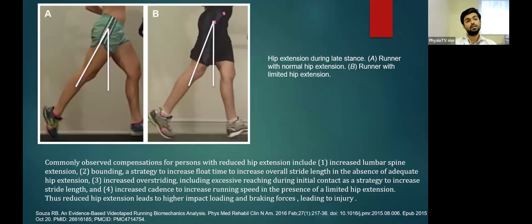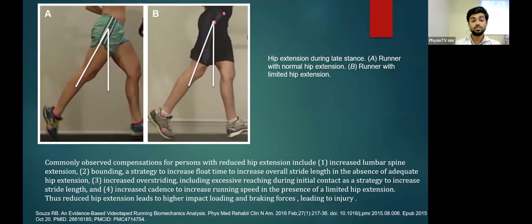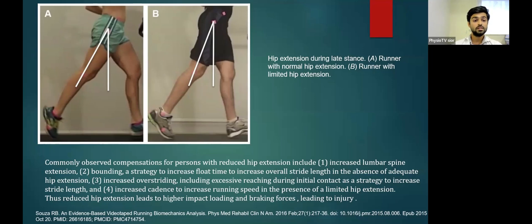Regarding hip extension angle — diagram A shows normal hip extension, while diagram B shows a reduced or limited hip extension angle. When hip extension is reduced, there will be an increase in lumbar spine extension. There may be an increase in bounding as a strategy to increase float time and overall stride length. It also increases over-striding, including excessive reaching during initial contact. Fourth, increased cadence may compensate for limited hip extension. Reduced hip extension leads to higher impact loading and braking forces, leading to injury. Runners with restricted hip extension must address this.